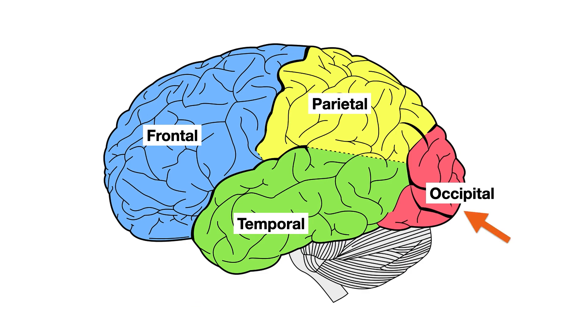And last but not least, the occipital lobe's primary function is simply, but very importantly, the processing of vision.